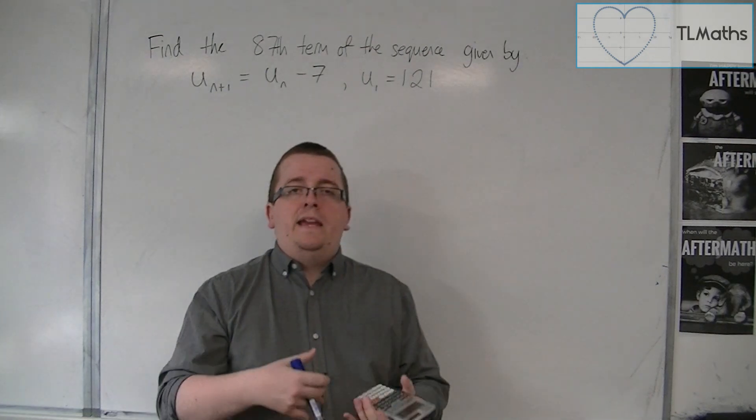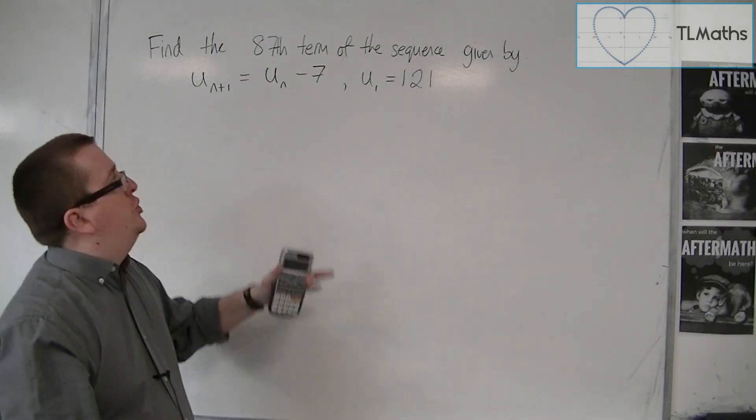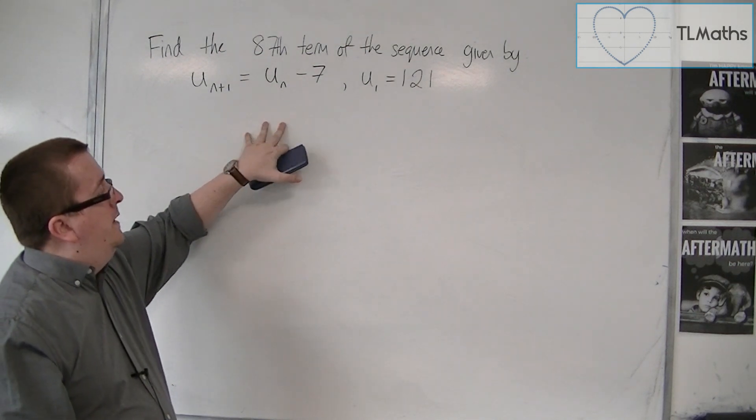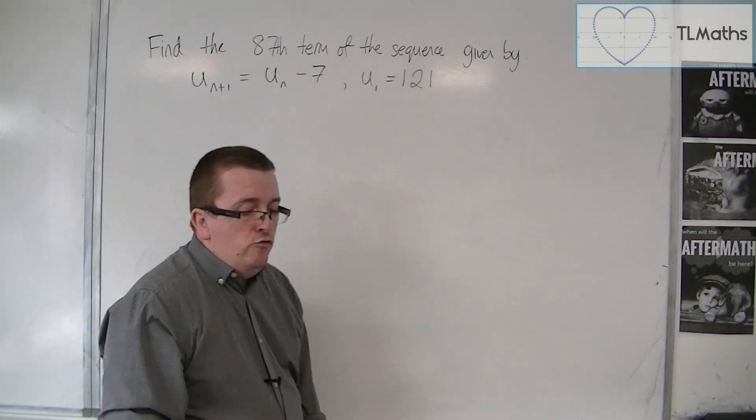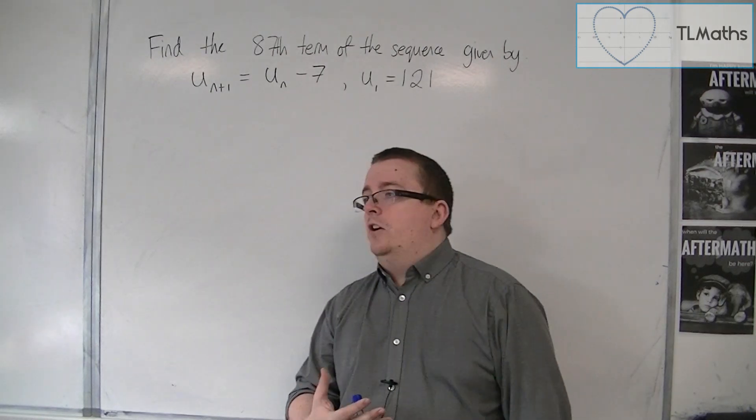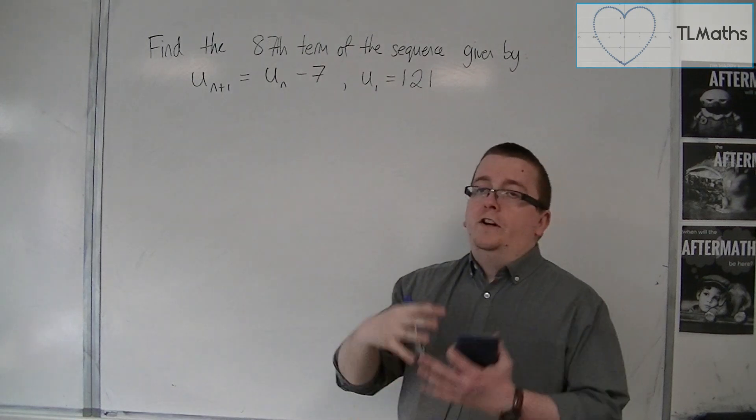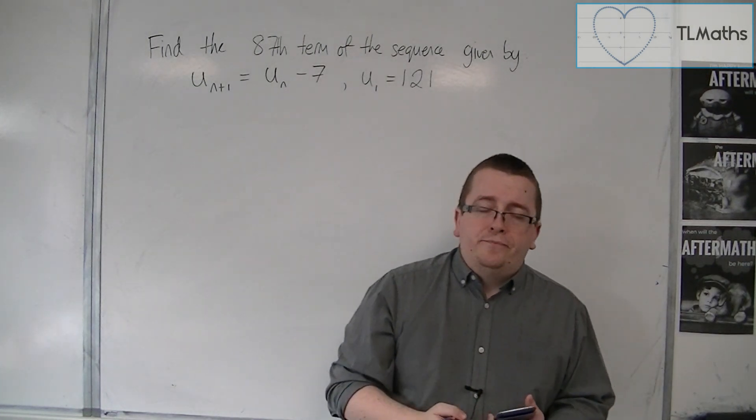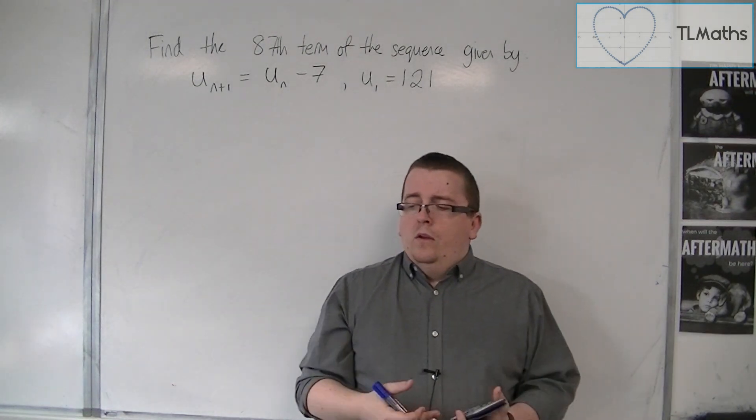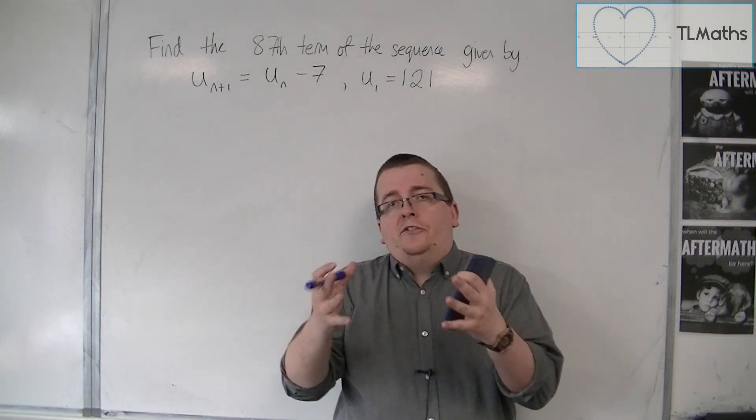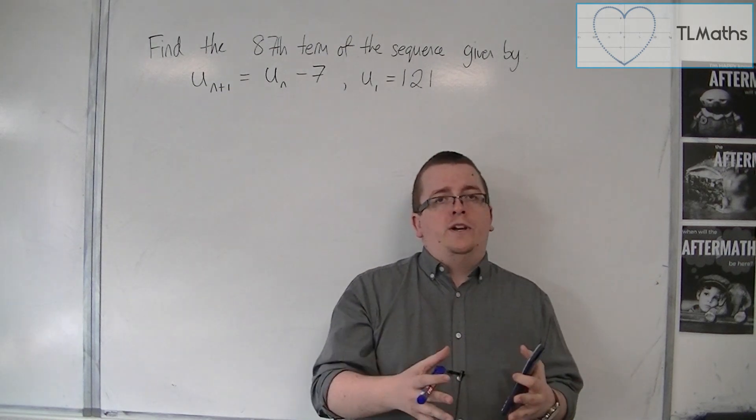In general, when you have an inductive definition like this with a recurrence relation, that's generally what you have to do. Because this could be any kind of function of u_n, there's no telling that there has to be an nth term that will allow us to shortcut.